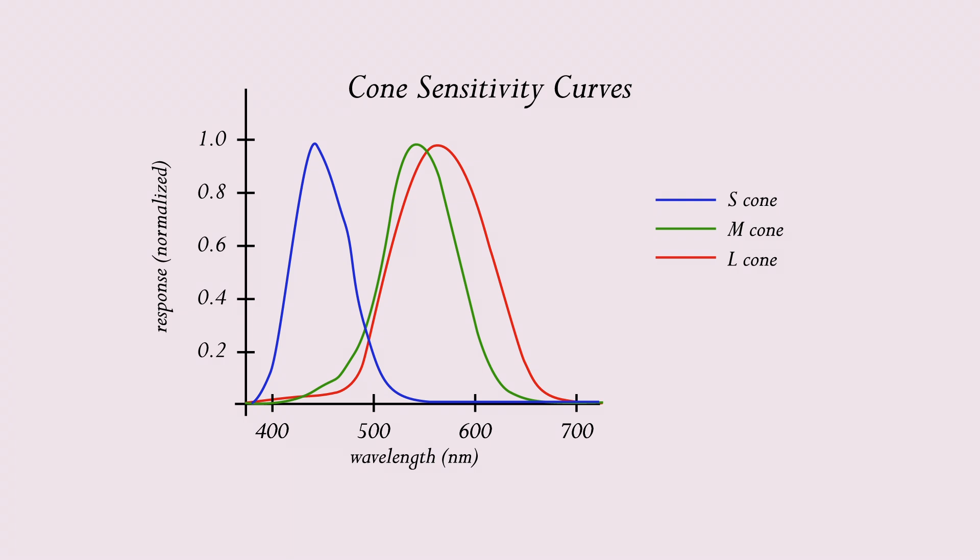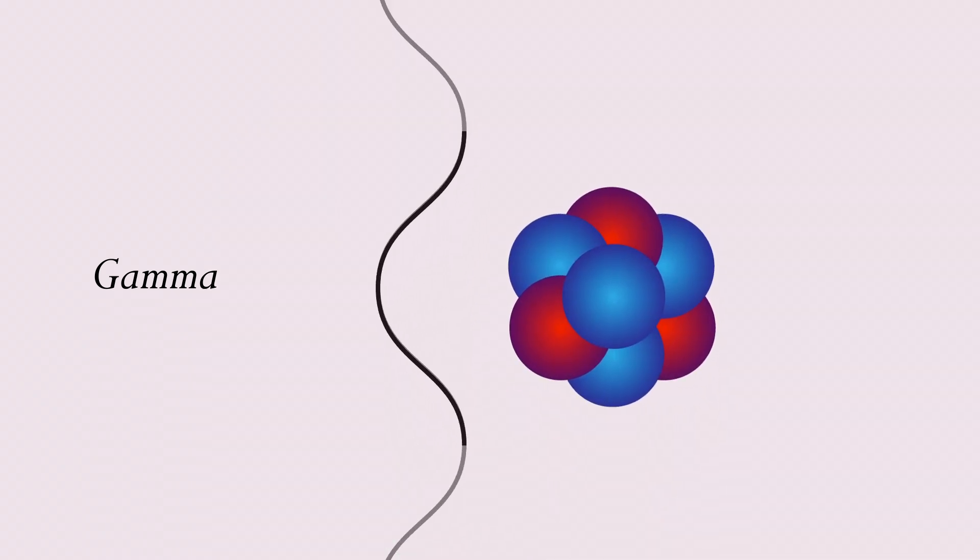However, our cones aren't sensitive to light with wavelengths shorter than 400 nanometers, or longer than around 700 nanometers. For example, a gamma wave's wavelength is about the size of an atomic nucleus, which is much too short for any of our three types of cones to sense. Radio waves are too long, with wavelengths longer than two Empire State Buildings put together.